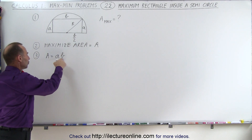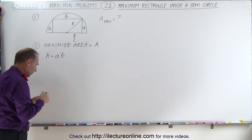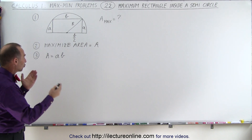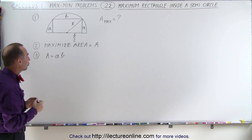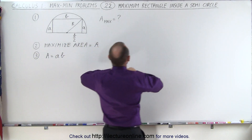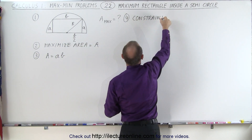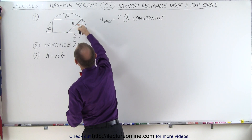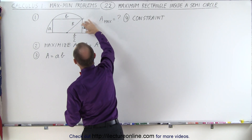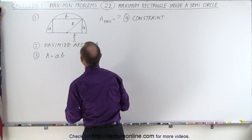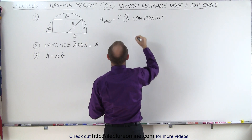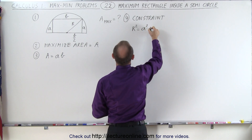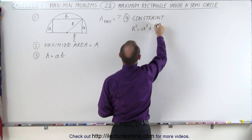We have the area in terms of two variables, but we want the area in terms of only one variable. Therefore, we're going to need a constraint so we can relate A to B. If I look at this triangle, we can see that the hypotenuse is R, this side is A, and this side is B over 2. The Pythagorean theorem tells us that R squared is equal to A squared plus (B/2) squared.